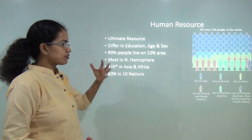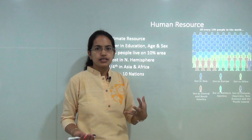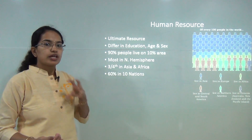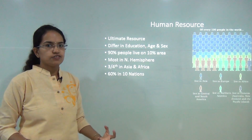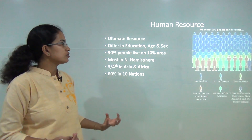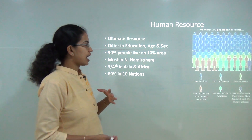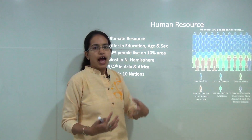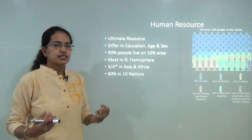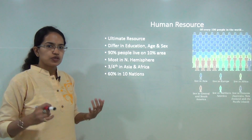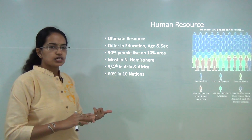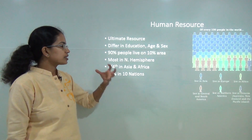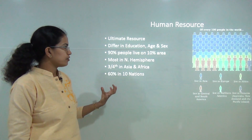We have talked about a lot of resources in this Class 8 NCRT — agriculture, minerals, and industry. Now the key that we would be talking about is the individual or the human being, which is considered as the ultimate resource. The key aspect is that every individual differs in education, age, sex, or basic understanding level.